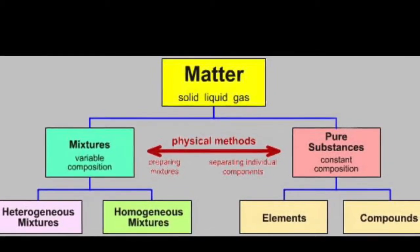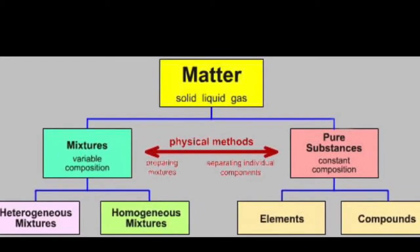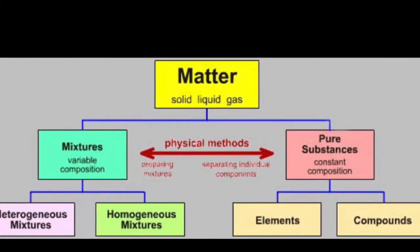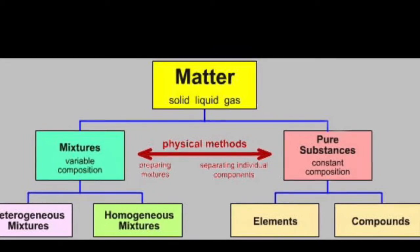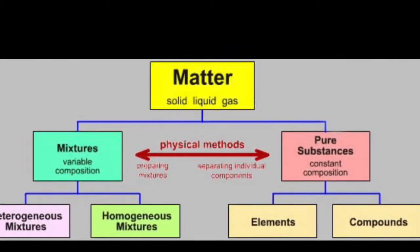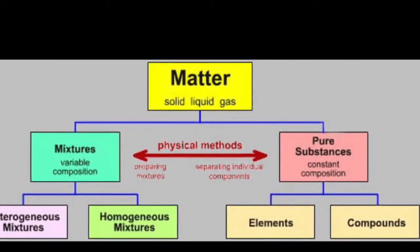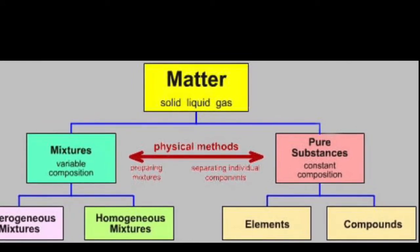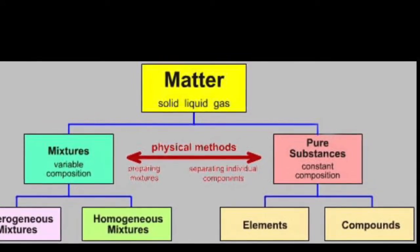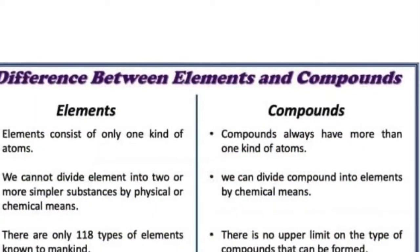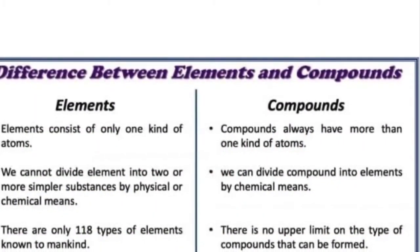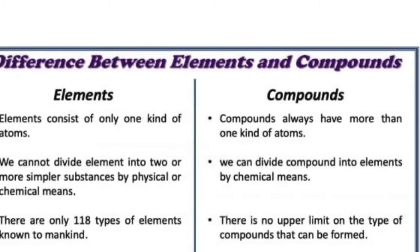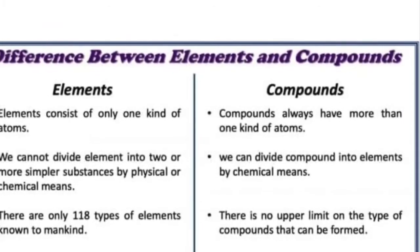A pure substance consists of only one kind of particle — that is what we call a pure substance. In impure substances, it consists of two or more types of particles. Pure substances are classified into elements and compounds.